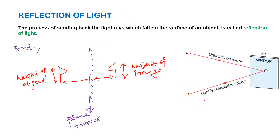Reflection of light is the process of sending back of light rays. Think of playing with a ball — you hit the ball to a wall and it comes back. The same thing happens with a light ray: whenever a light ray strikes a mirror, it comes back into the same medium. This concept is known as reflection, and because of it you are able to view an object's image.